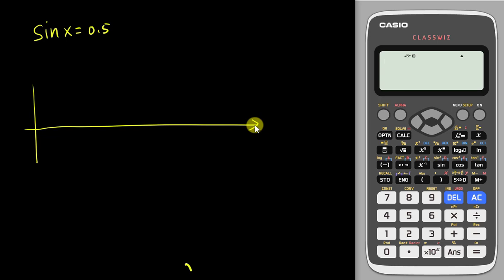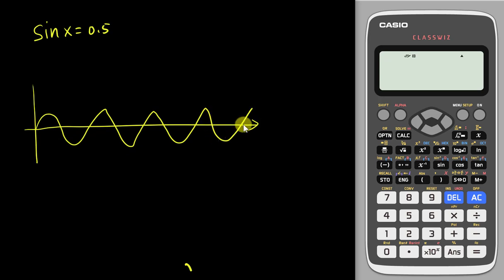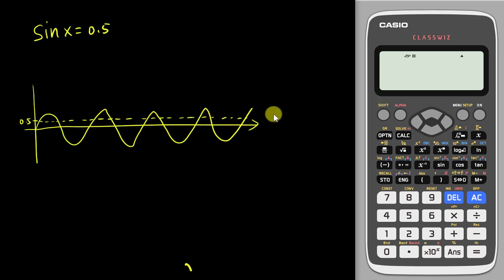What I mean by infinite answers is something like this — because the sine graph will never stop, it will keep on going. So when sine x equals 0.5, you can see the line at 0.5 here; it will keep on intersecting with the sine graph, and each intersection point will be one of your answers.